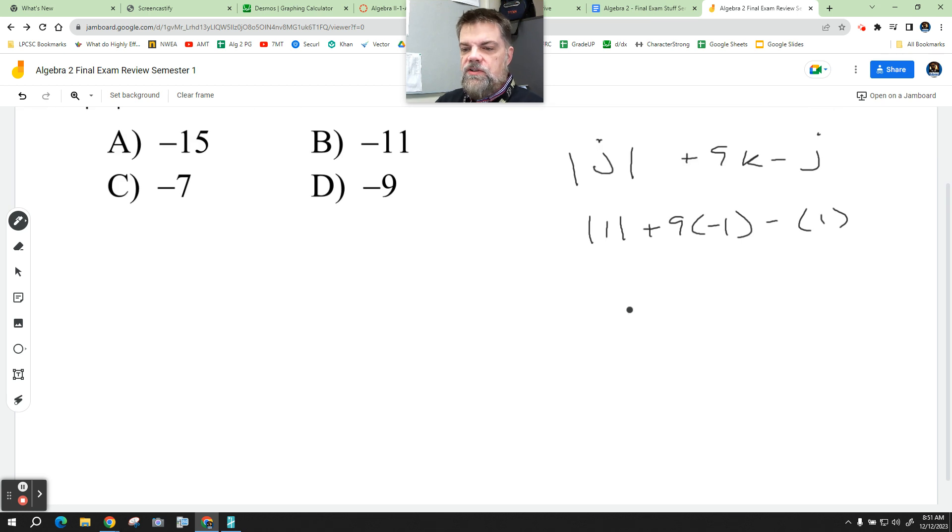Now you could actually do this on your graphing calculators, but what's the absolute value of 1? Now remember, we should do the multiplication first. So what's 9 times negative 1? Negative 9. And then this is the same as negative 1 times 1, so you just put a negative 1 here.